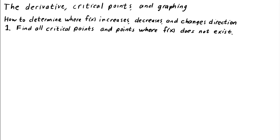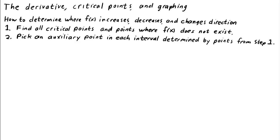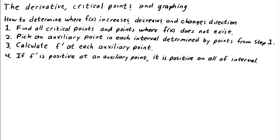Step 1: Find all critical points, or points where f of x doesn't exist. Step 2: These points divide the number line into intervals — one interval to the left of all the points, one interval to the right of all points, and an interval between each pair of consecutive points. Pick a convenient point to represent that interval; we could call these points auxiliary points. The auxiliary points can be any point on each interval, but they cannot coincide with a critical point or a point where f of x doesn't exist. Step 3: Calculate the derivative at each auxiliary point. Step 4: If f prime is positive at an auxiliary point, it is positive everywhere on the corresponding interval, since f prime cannot change sign on the interval. We can conclude that f is increasing on the interval.